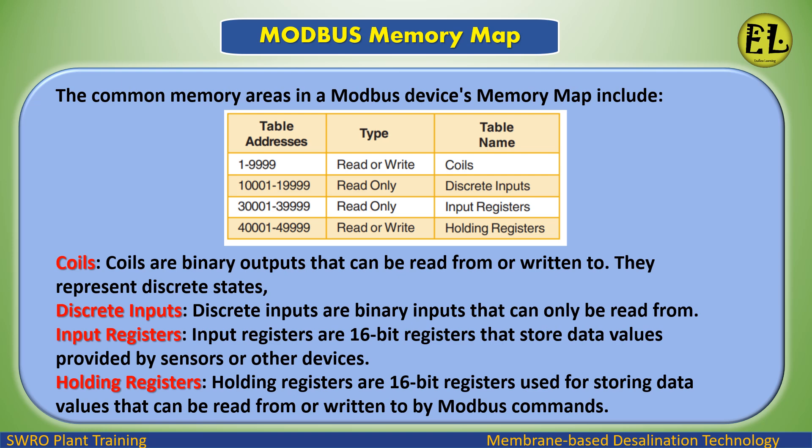The Modbus memory map includes: Coils — binary outputs that can be read from or written to; they represent discrete states. Discrete inputs — binary inputs that can only be read from. Input registers — 16-bit registers that store data values provided by sensors or other devices. Holding registers — 16-bit registers used for storing data values that can be read or written.